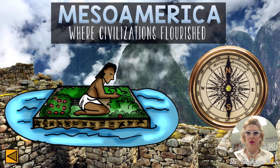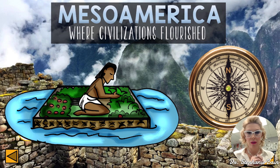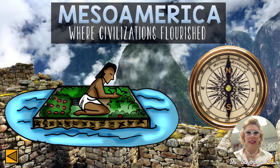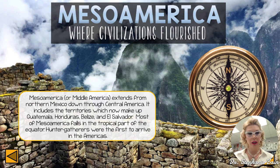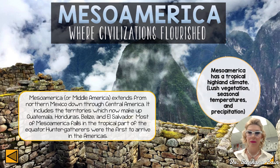This presentation will help with early American history, focusing on Mesoamerica — what it looked like, who lived there, what years it existed, and what cultures flourished. Mesoamerica, or Middle America, extends from northern Mexico down to Central America, including territories now known as Guatemala, Honduras, Belize, and El Salvador. Most of Mesoamerica falls in the tropical part of the equator; hunter-gatherers were the first to arrive. It has a tropical highland climate with lush vegetation and seasonal temperatures.